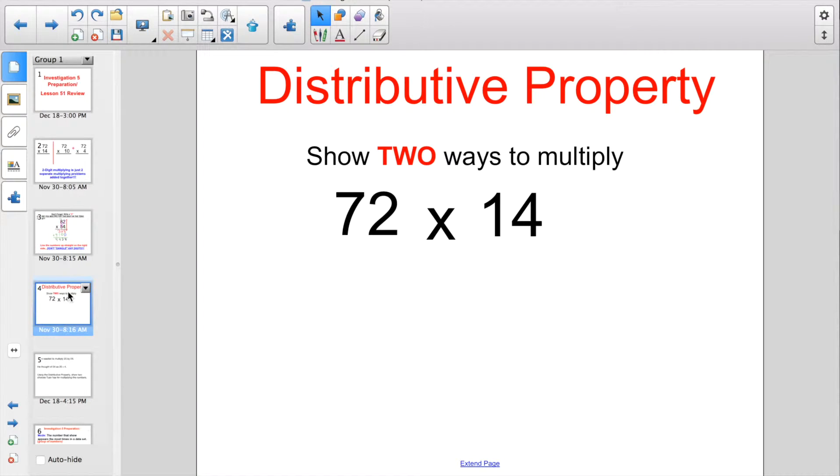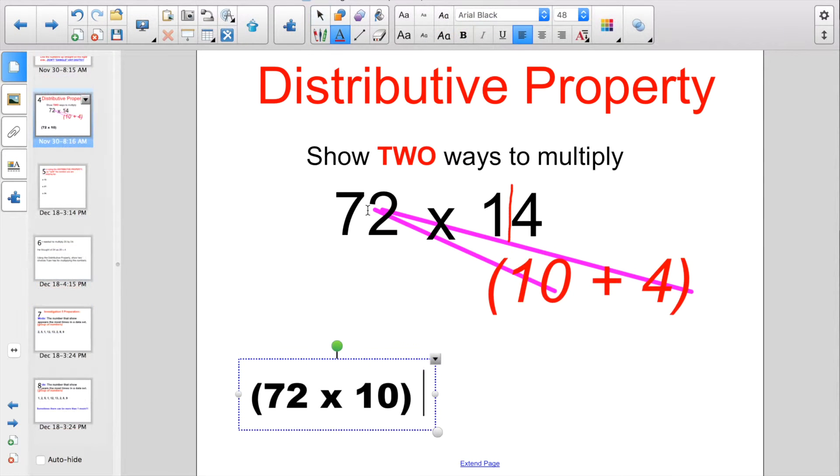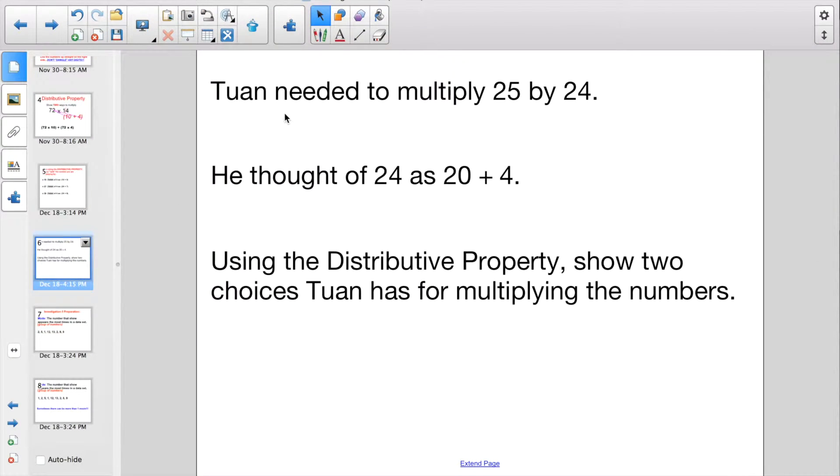So the other thing people were definitely struggling on when we were talking about the distributive property, showing two different ways of multiplying. So you always got to think of that second digit you're multiplying by of splitting it in half. The first one we are multiplying after we split the number apart is 72 times 10. And we're going to add that answer to 72 times 4. So let's take a look here. We're going to see this problem over and over and over again. Where it says, Twan needed to multiply 25 by 24. He thought of 24, the second digit, as 20 plus 4. And then it says, using the distributive property, show two choices Twan has for multiplying the numbers.